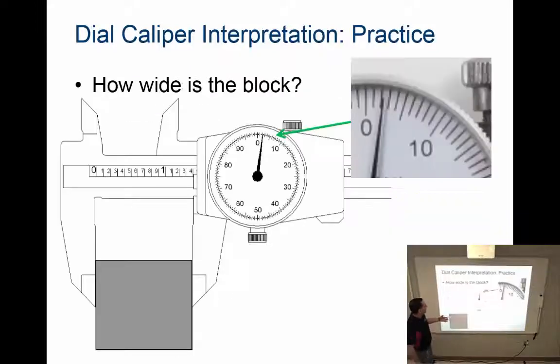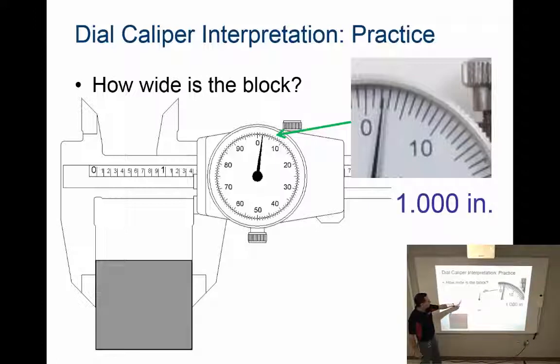Let's do another example. How wide is this block? Again, whole inches first. I have one whole inch, and I'm going to read my scale increments: point one, point two, point three, point four. I do see the line, so I'm beyond point four, so I'm at one point four. Now I'm going to go here.